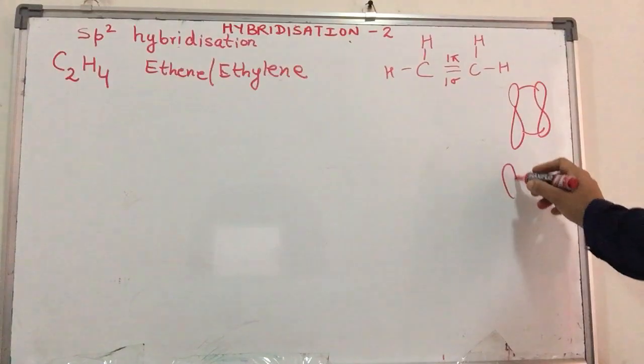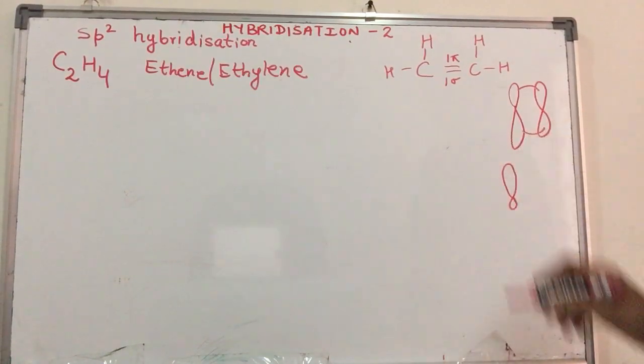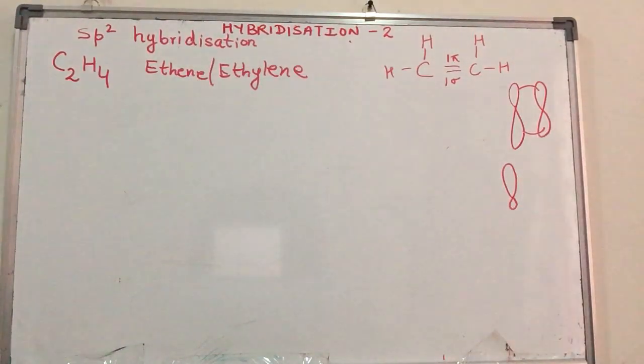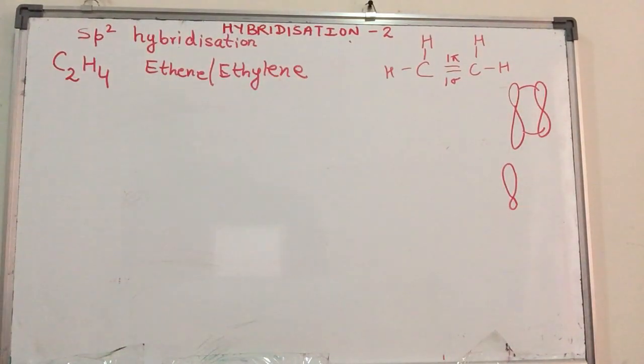When we spoke about hybridization, what we found was that there is redistribution of energy, so we don't have two lobes over here. So in other words, when I am talking about ethene or ethylene, I need to leave one p orbital available to form pi bond.